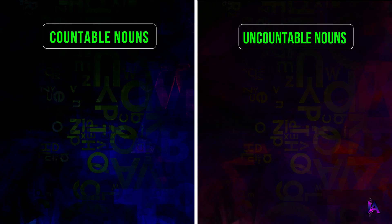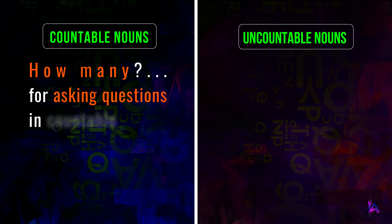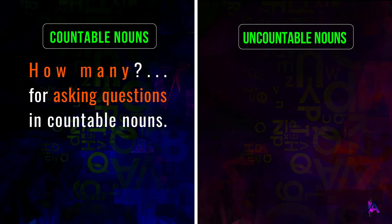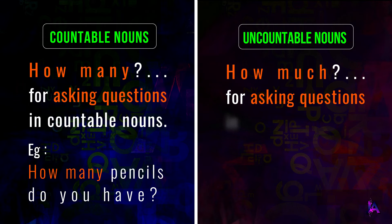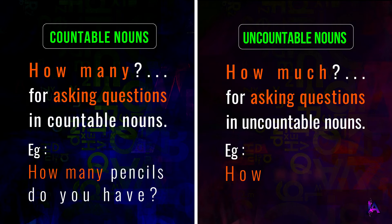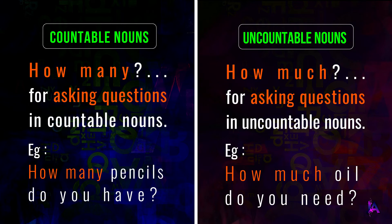Fourth, we use 'how many' for questions with countable nouns — How many pencils do you have? Whereas, with uncountable nouns, we use 'how much' in question form — How much oil do you need?